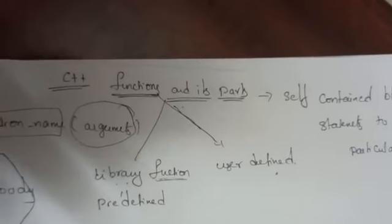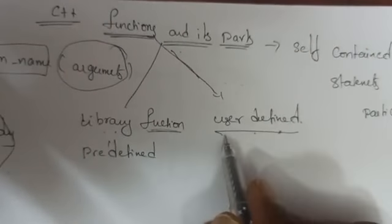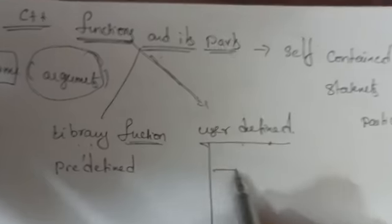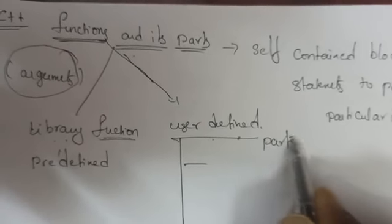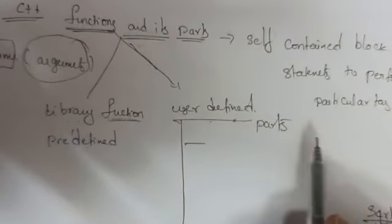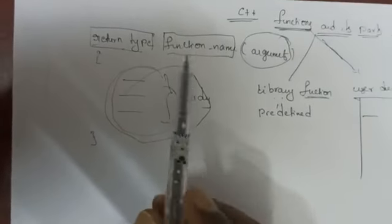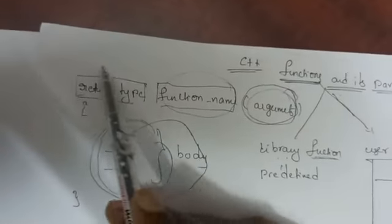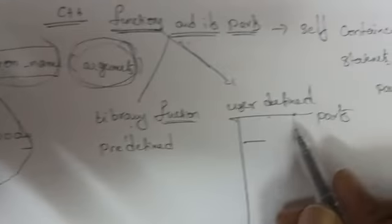For your required purpose, you can write your own functions — those are called user-defined functions. When we are writing any function, what parts are required? The body of the function is required, the function name is required, arguments are required, and the return type is required. These all are called the various parts of a function.